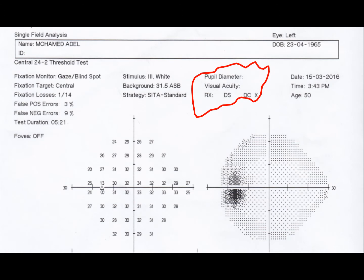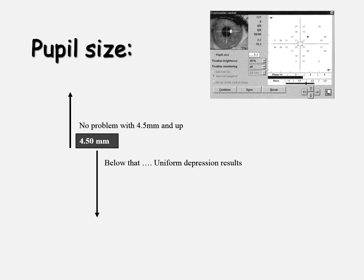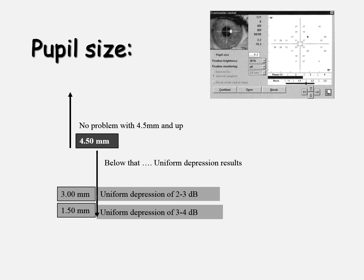You need to check that the pupil diameter is entered correctly and the glasses prescription is recorded. Regarding pupil diameter: if the diameter is 4.5 mm or larger, this is fine. Below that, there will be a uniform depression of the field. A diameter of 3.5 mm will cause a depression of 2 to 3 decibels, and a pupil diameter of 1.5 mm will cause a depression of 3 to 4 decibels.